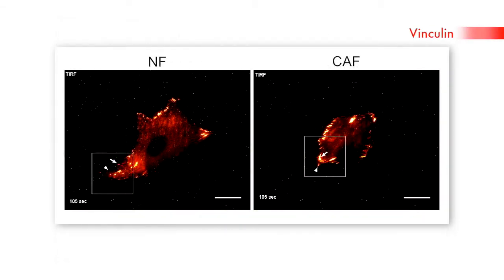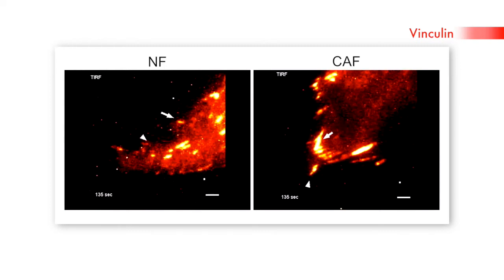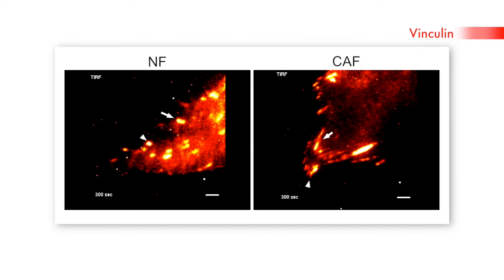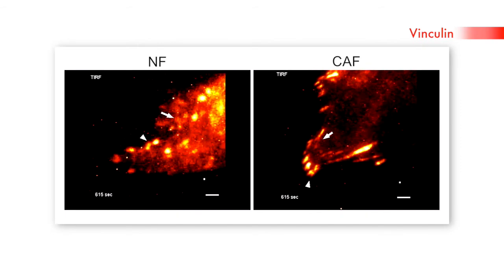CAFs also have larger, more stable adhesions — another indicator of increased contractility. Cells transmit forces to the extracellular matrix via integrin adhesion molecules. So the researchers examined the role of the major fibronectin-binding integrin alpha-5-beta-1.